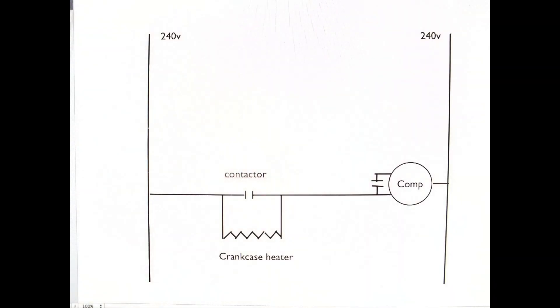Here's a simplified diagram of the wiring to wire that crankcase heater. If you notice, the two vertical lines are the 240-volt lines coming in. The contactor is a single pole contactor. Those are the contacts there, and if they close, they go to the compressor and start the compressor.